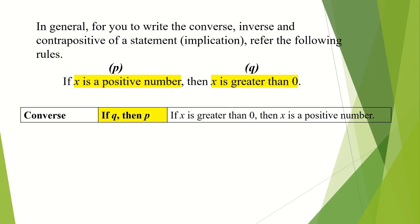For the converse, it's pretty simple. You only need to switch the position of q and p. Originally you have if p, then q. As for the converse, you need to switch it to if q, then p. In this case, your converse will be: if x is greater than zero, then x is a positive number.